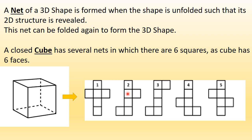Similarly, look at this — if this becomes the base, then these are the two sides. This is the top and these are the two sides. You can fold all these nets and you will get the 3D cube again. Now what is a closed cube? A closed cube means that it is completely closed — it is not open and does not have any face that is missing. All the faces are there. Just like a marble, all the faces are closed. A closed cube has several nets in which there are six squares, as a cube has six faces: the top face, bottom, front, back and the side faces — all together six squares.